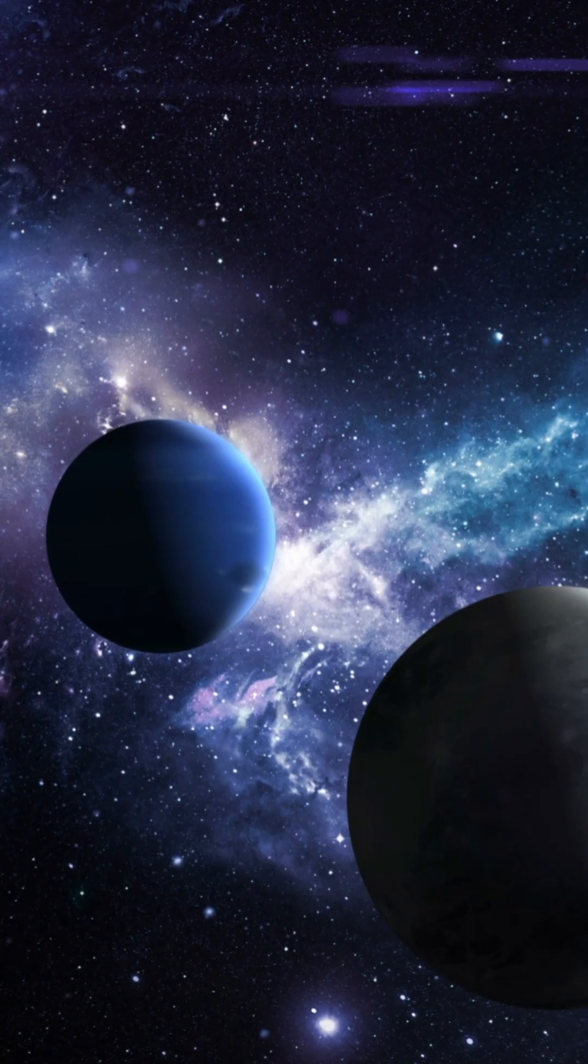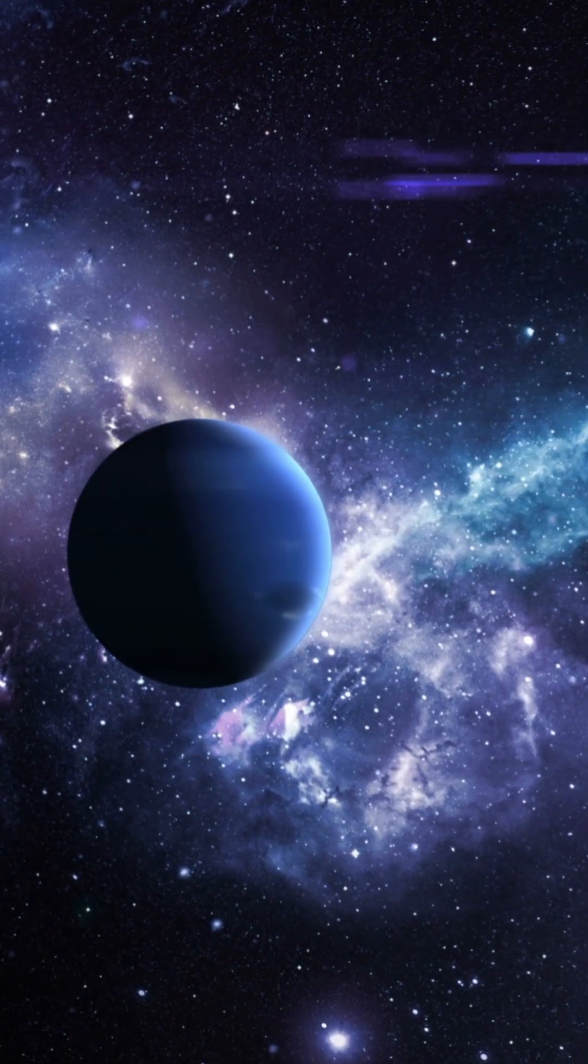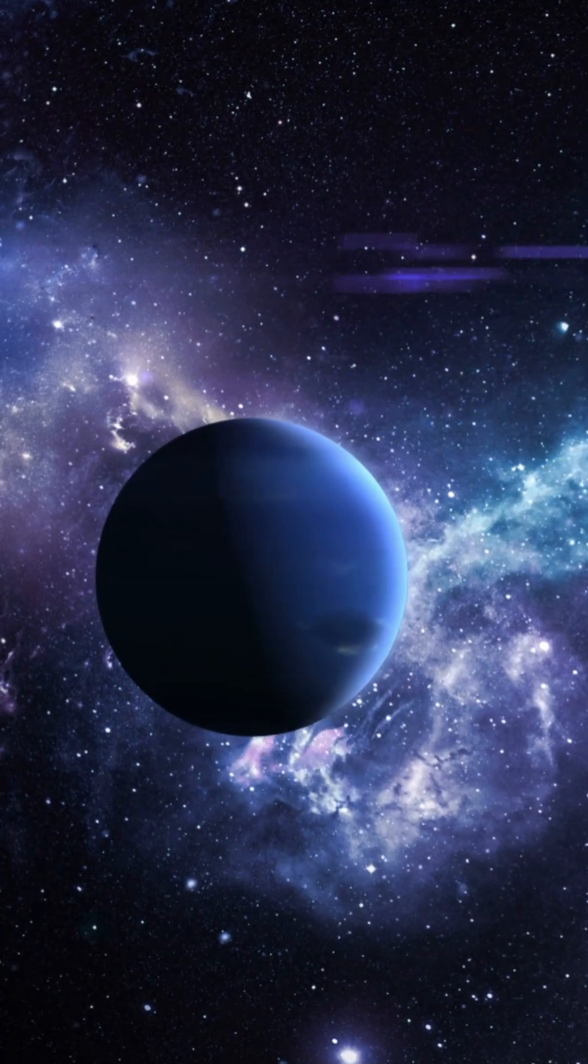William Herschel accidentally discovers the planet Uranus. We knew about Mercury, Venus, Earth, Mars, Jupiter, Saturn.